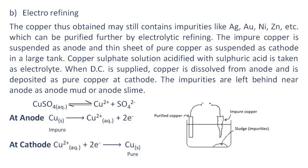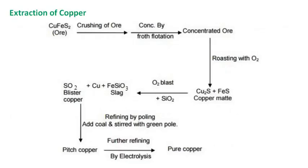Electro-refining: The copper obtained may still contain impurities like silver, gold, nickel, zinc, etc., which can be purified further by electrolytic refining. The impure copper is suspended as anode and a thin sheet of pure copper as cathode in a large tank. Copper sulfate solution acidified with sulfuric acid is taken as electrolyte. When DC is supplied, copper is dissolved from the anode and deposited as pure copper at the cathode. The impurities are left behind near the anode as anode mud or anode slime. This is the flowchart of extraction of copper.